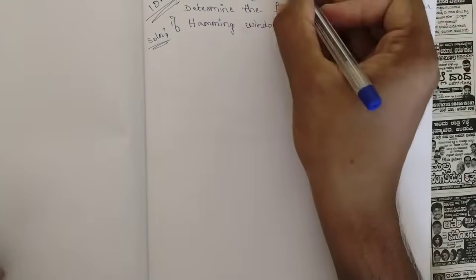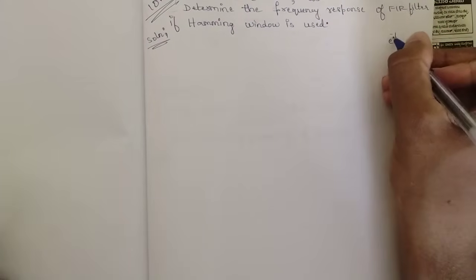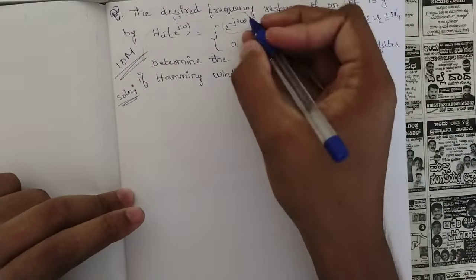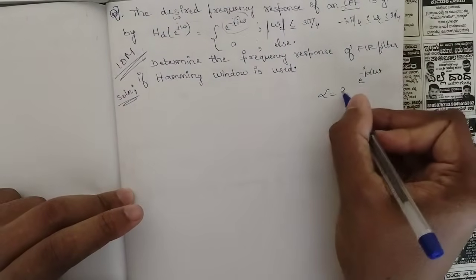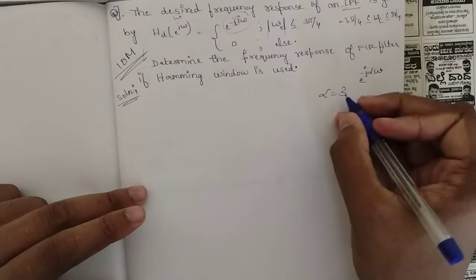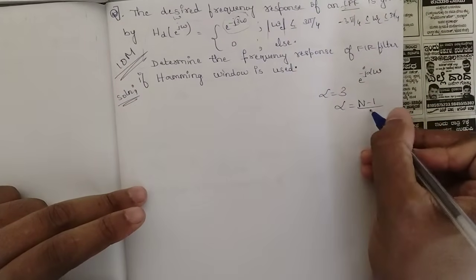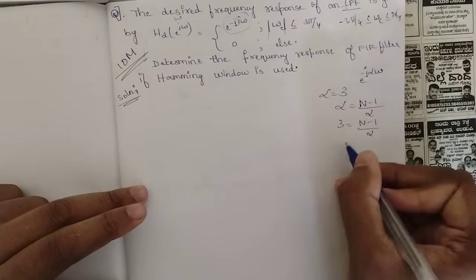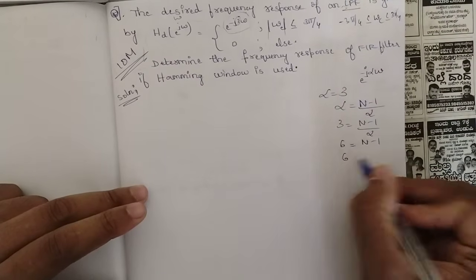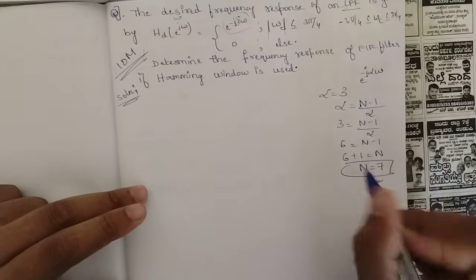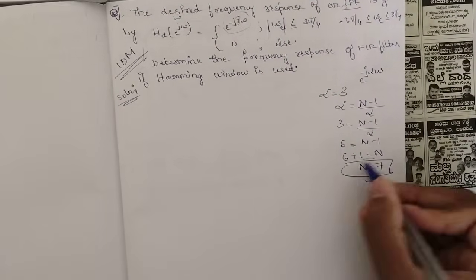In the desired frequency response, the general form is e^(−jαω). Here we have e^(−j3ω), so α = 3. Using the formula α = (N−1)/2, we get 3 = (N−1)/2, which gives N−1 = 6, so N = 7. The filter length is 7.